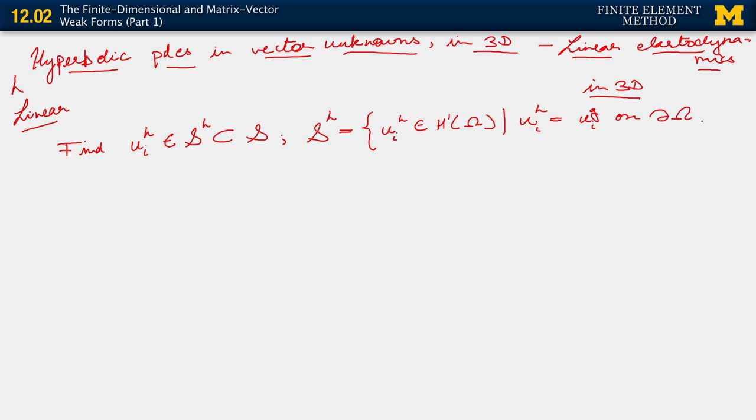Such that u_i^h equals u_i given on the corresponding Dirichlet boundary, the part of the Dirichlet boundary that corresponds to that particular spatial dimension denoted by i.